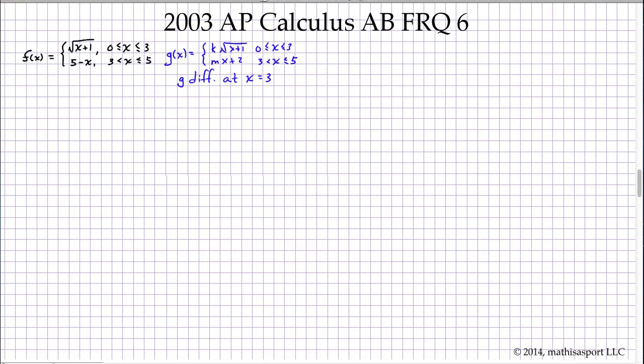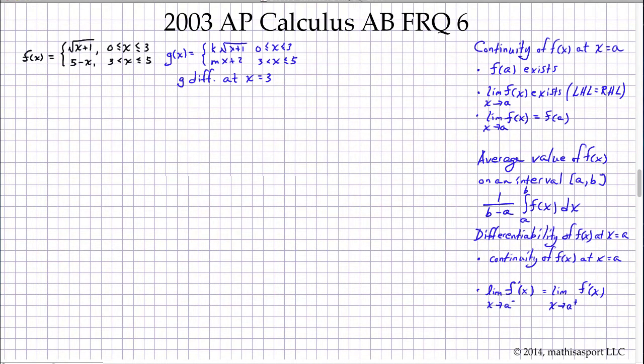We're working here with piecewise functions, one that will use f of x for the first two parts of the question and then one that's reserved for the final part of the question. And we're going to be covering continuity, differentiability, and the average value of a function over an interval. So this is the sort of information that's going to prove useful. And we'll go ahead and start with part A that asks us to show that we've got continuity at x equals 3.